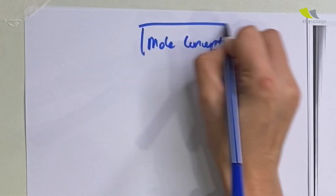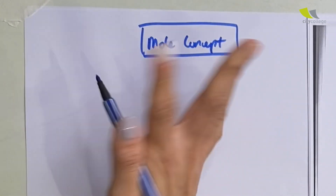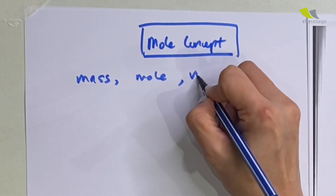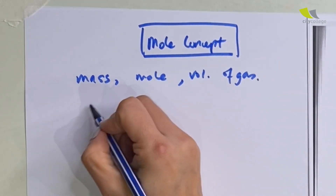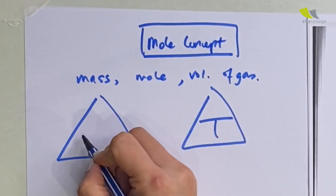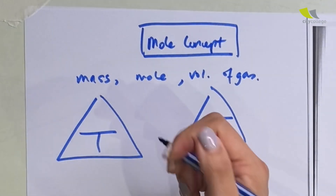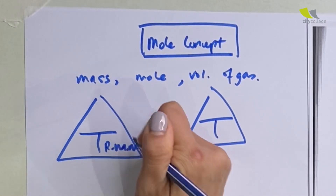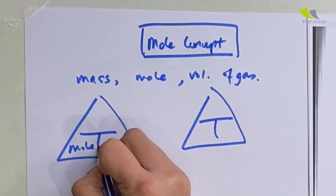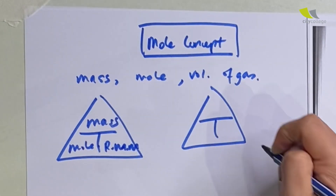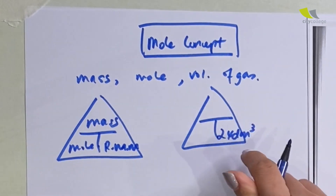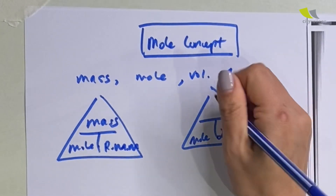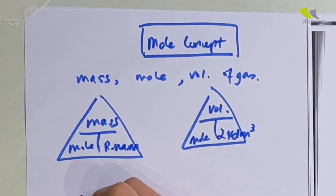Under the topic of mole concept, there are usually three things you're often asked to find: mass, mole, and volume of gas. There are two big triangles to memorize. One is: RMM (relative molecular mass) multiplied by mole gives you the total mass. The other is: since one mole of any gas occupies 24 dm³, mole multiplied by 24 gives you the total volume of gas.